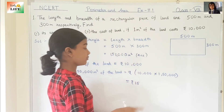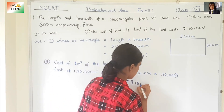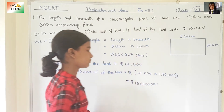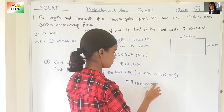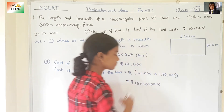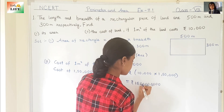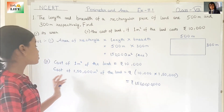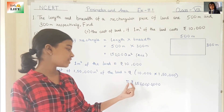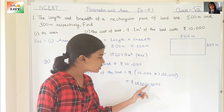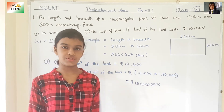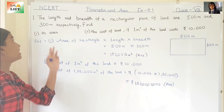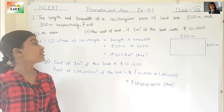15 ones are 15, then counting the zeros: 4 zeros in 10,000 and 4 zeros in 1,500,000 gives a total of 8 zeros after 15. So the cost of 1,500,000 meter square of the land is rupees 15,000,000,000. With this, we have completed question number 1 of exercise 11.1.